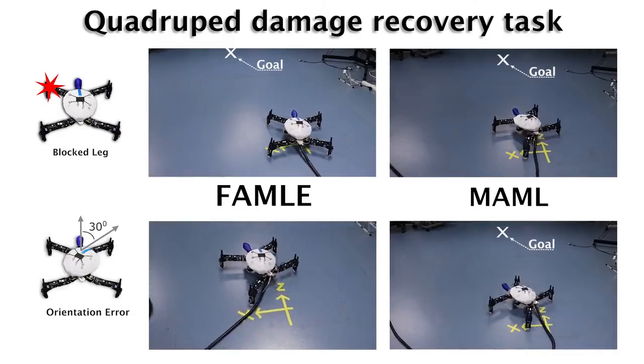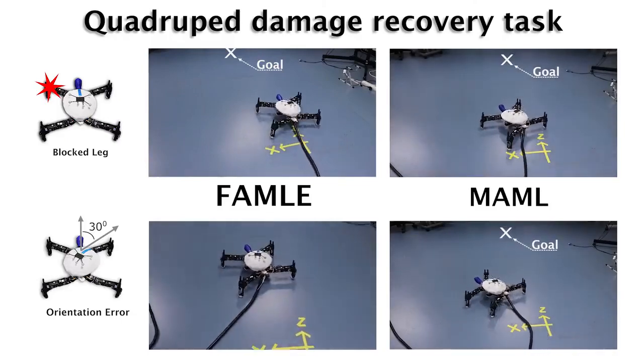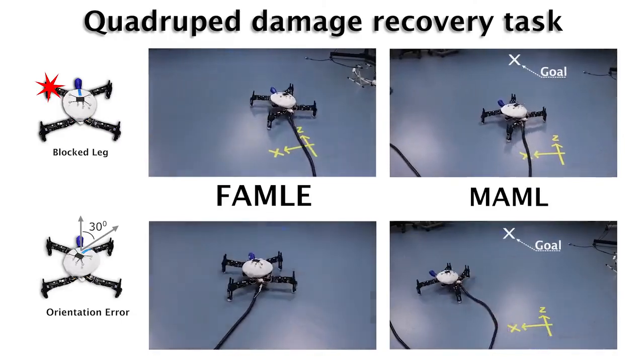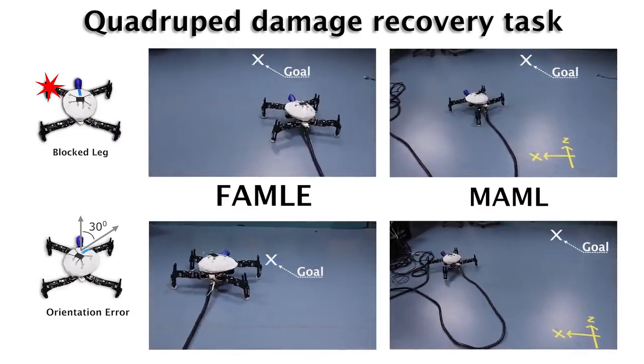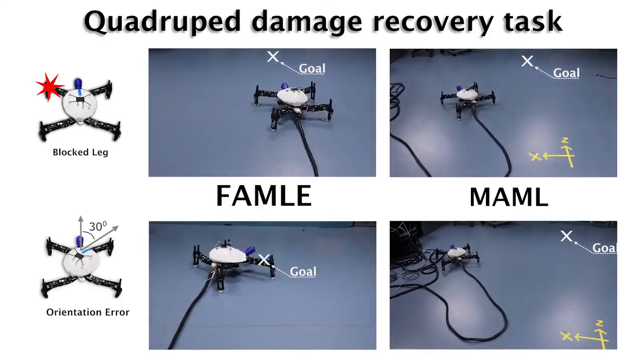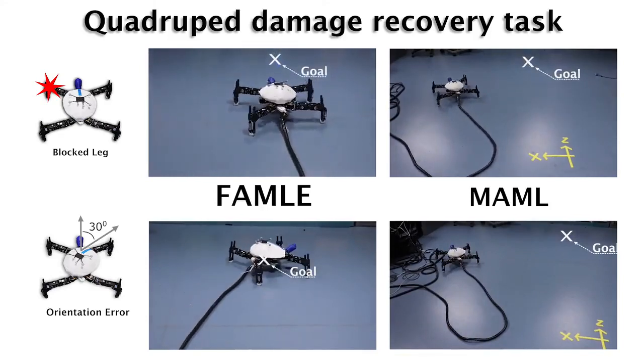In this experiment, using FAMIL, a damaged quadruped robot could adapt online and reach the goal location in less than two minutes. On the other hand, using model-agnostic meta-learning, the robot failed to reach the goal within the maximum specified time.